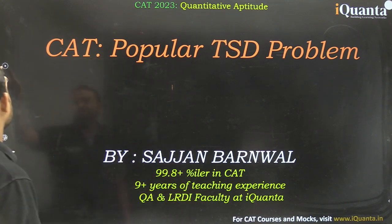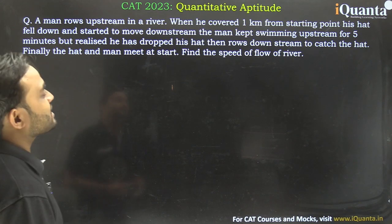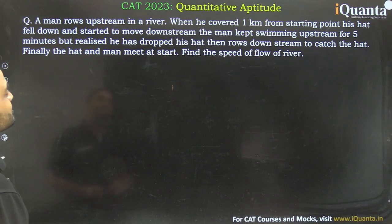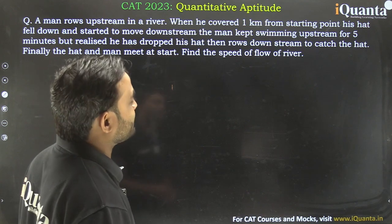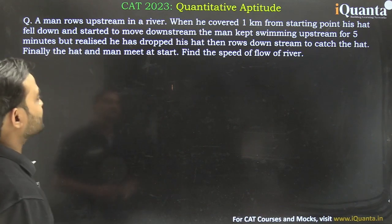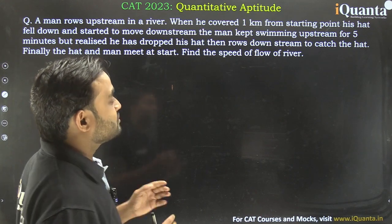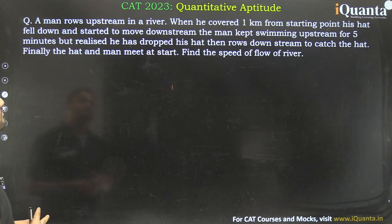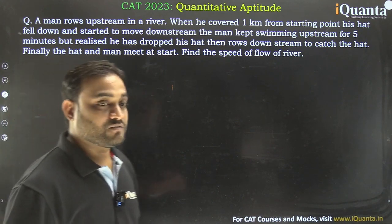This question is the apex of that problem. It says: a man rowed upstream in a river. When he had covered 1 km from the starting point, his hat fell down and started to move downstream. The man kept swimming upstream for 5 minutes but then realized he had dropped his hat. He then rowed downstream to catch the hat. Finally, the hat and the man meet at the start point. Find the speed of the flow of the river.